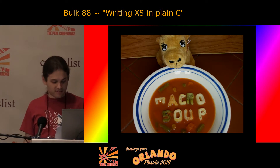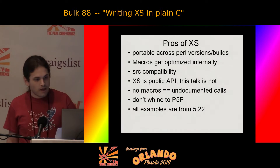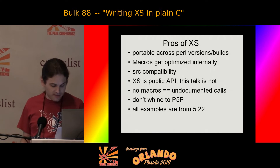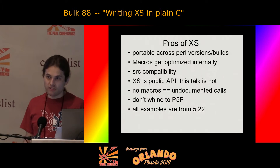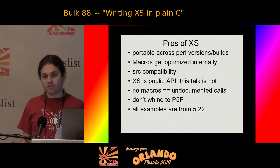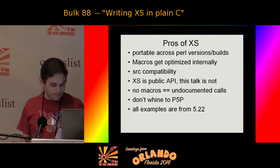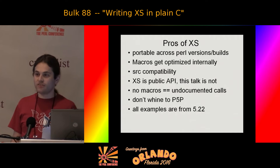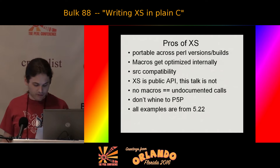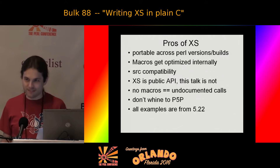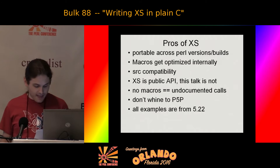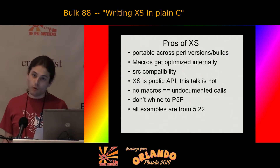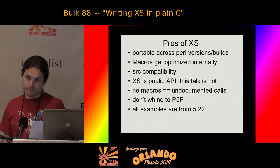XS is considered to be macro soup. The pros of using XS versus plain C are: you have actual source code compatibility, you aren't using undocumented calls for everything, and the macros can be upgraded internally by P5P between Perl releases without breaking your code. Everything shown today uses undocumented APIs, so don't complain to P5P if your code breaks. All examples are from Perl 5.22 because there's no backwards or forwards compatibility if you skip the official APIs.